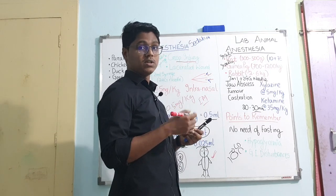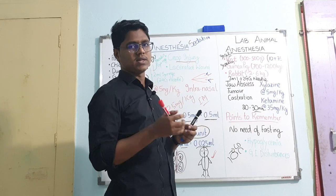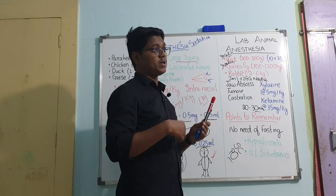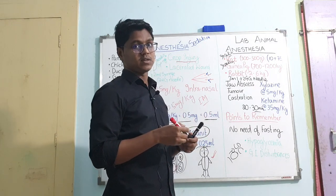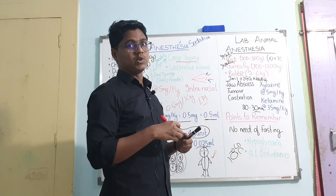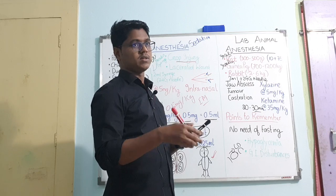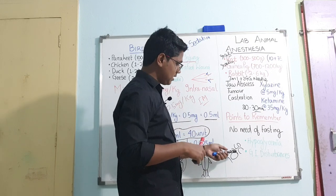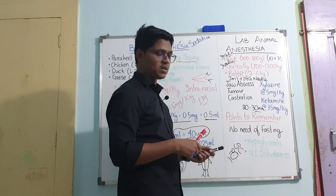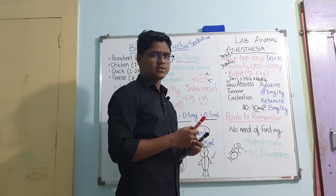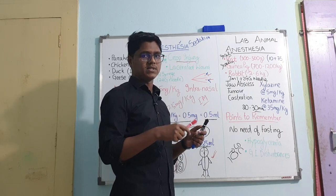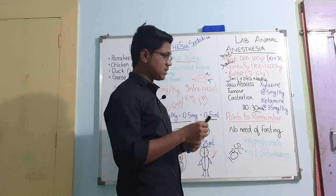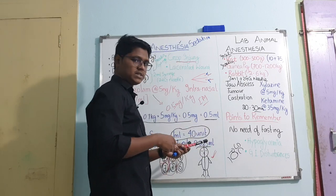Intramuscular injections in rabbits sometimes require a large volume — for example, 120 mg of a drug diluted in 0.9 ml water gives 1 ml total, which is too much for their small thin muscles, causing muscle necrosis. So prefer subcutaneous or per oral routes. Documents regarding rabbit medicine will be shared in my Google Doc link for download.